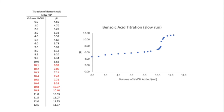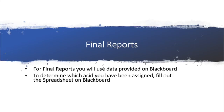That completes the lab demonstration for this week. Just a reminder: when you're doing your final lab reports, the data that you'll be using is actually the one provided on Blackboard. There are 6 different carboxylic acids and we provided data for all of those. You only need to do it for one of them — in order to determine which one you are assigned, please look at the spreadsheet on Blackboard. Thank you.